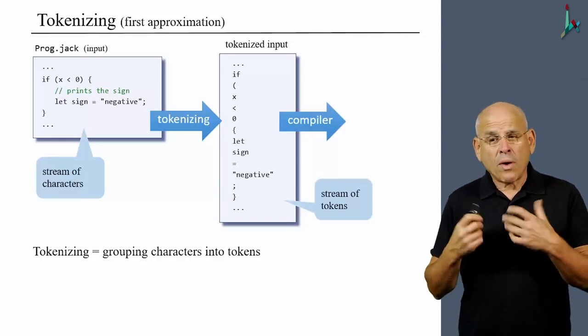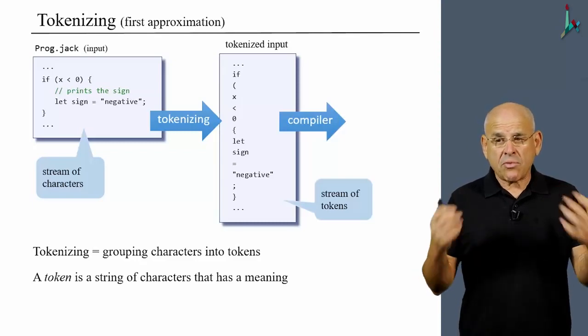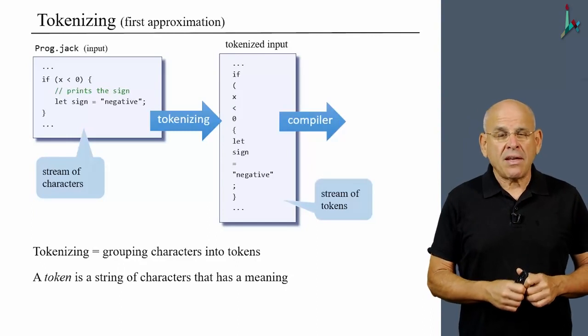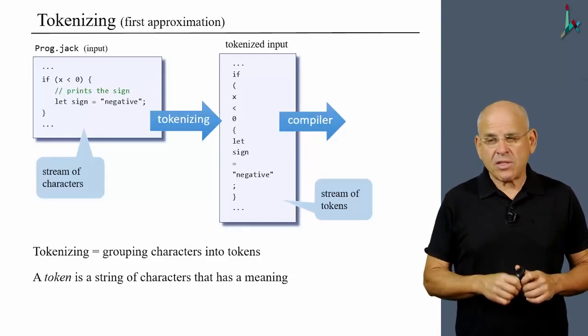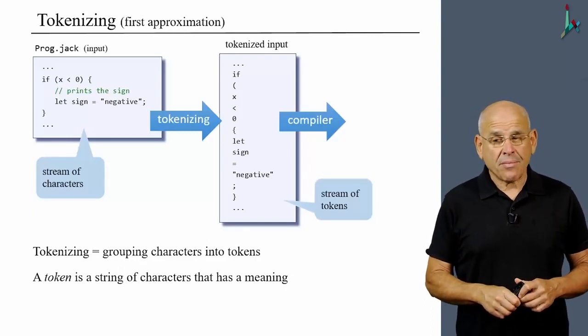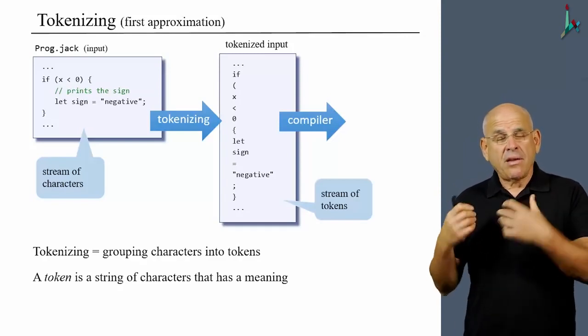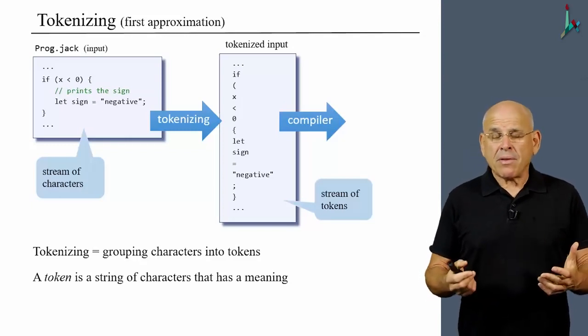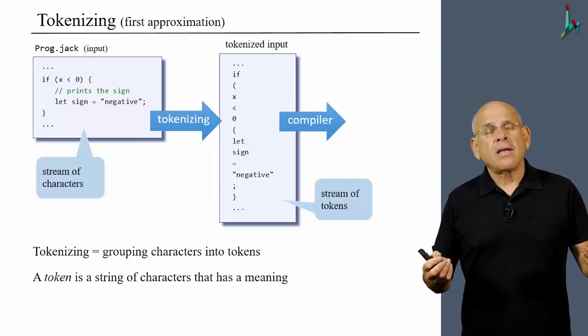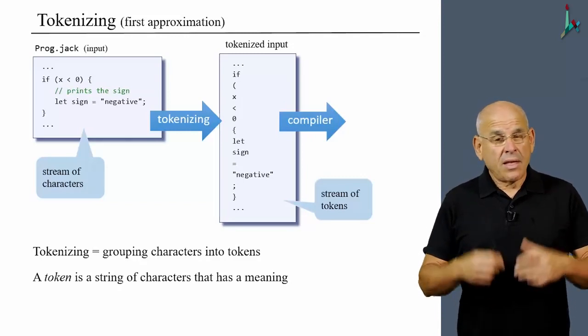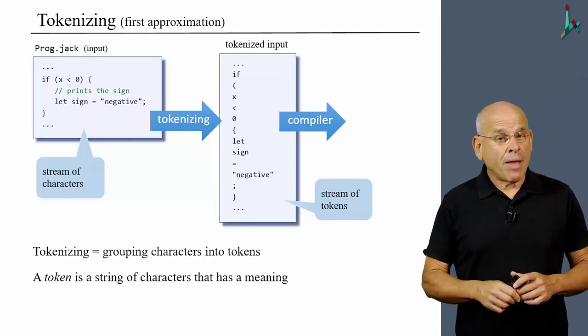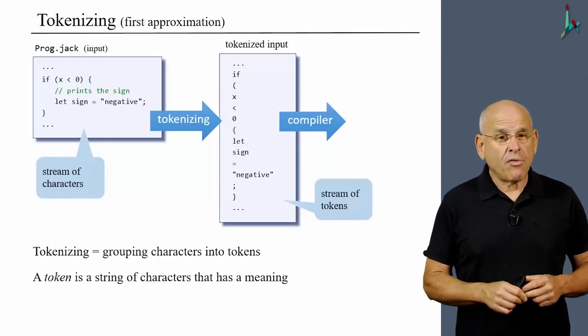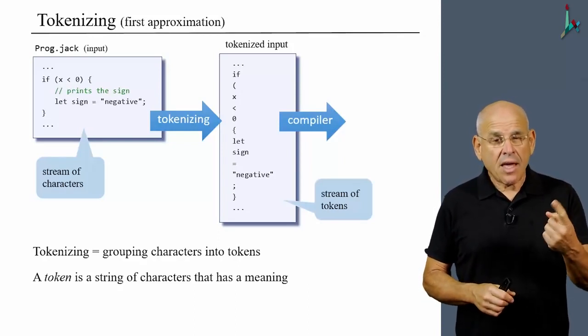What does it mean to be a token? Well, a token is a string or a sequence of characters that makes sense within the language that we are seeking to understand. And different programming languages have different definitions of tokens. For example, consider the statement x++. In the C language, this statement makes a lot of sense because we can parse it into two meaningful tokens: x and plus plus.